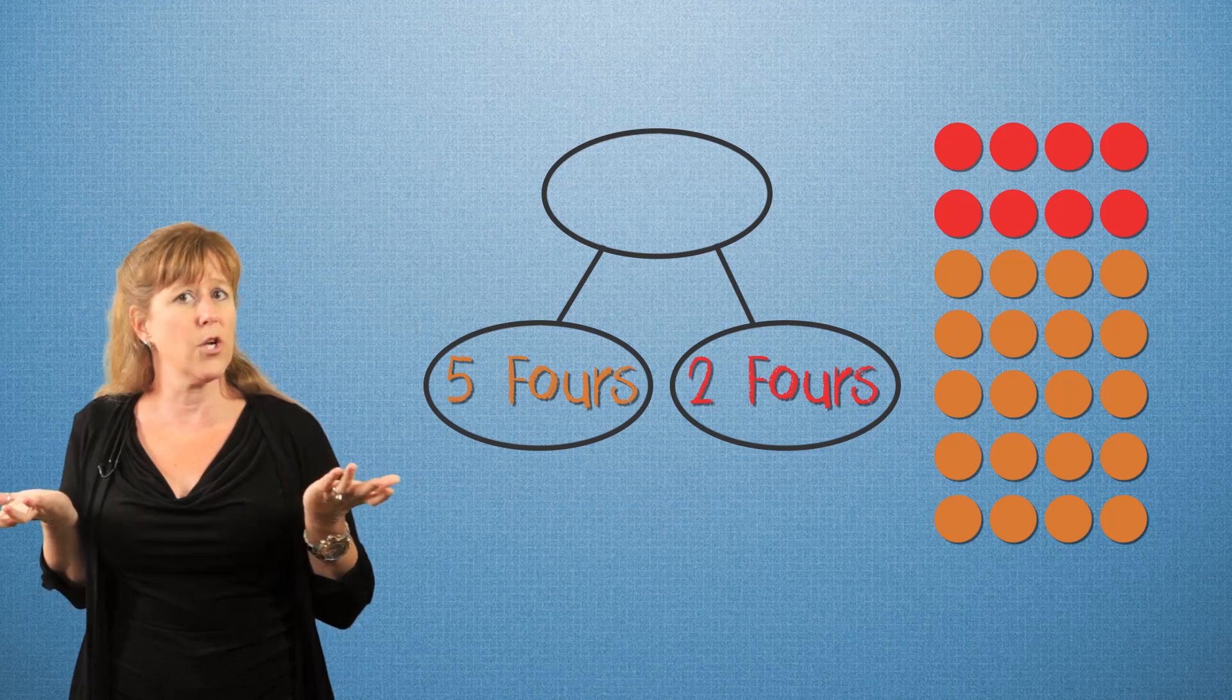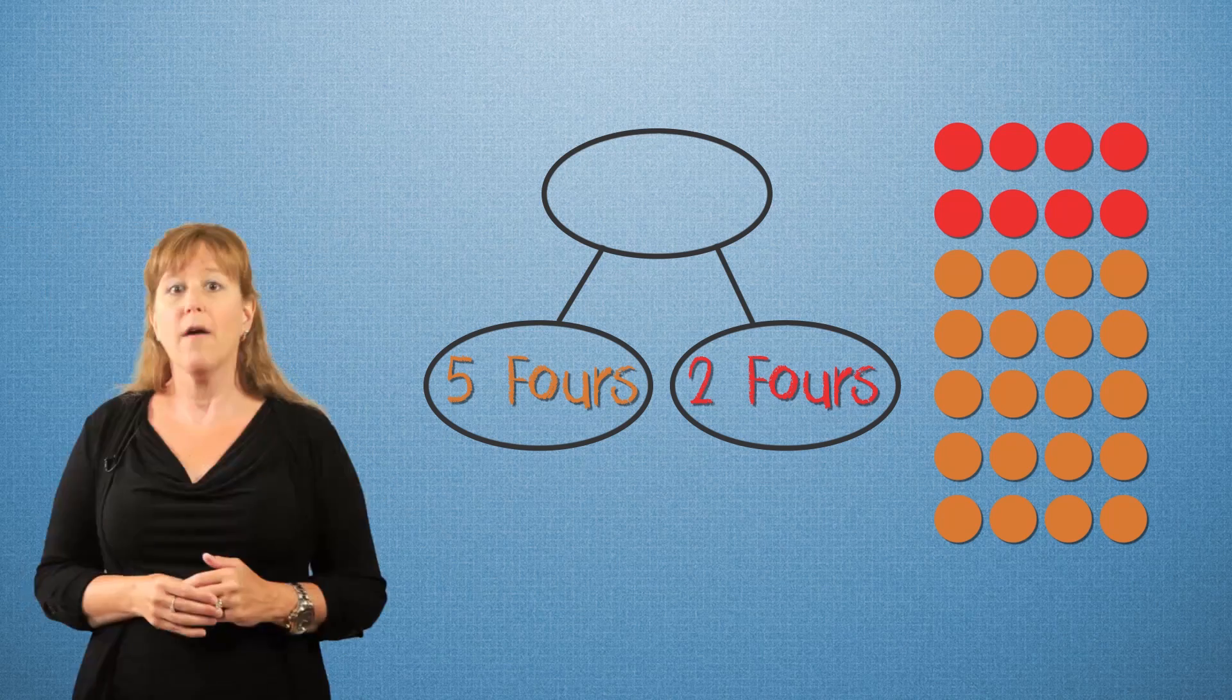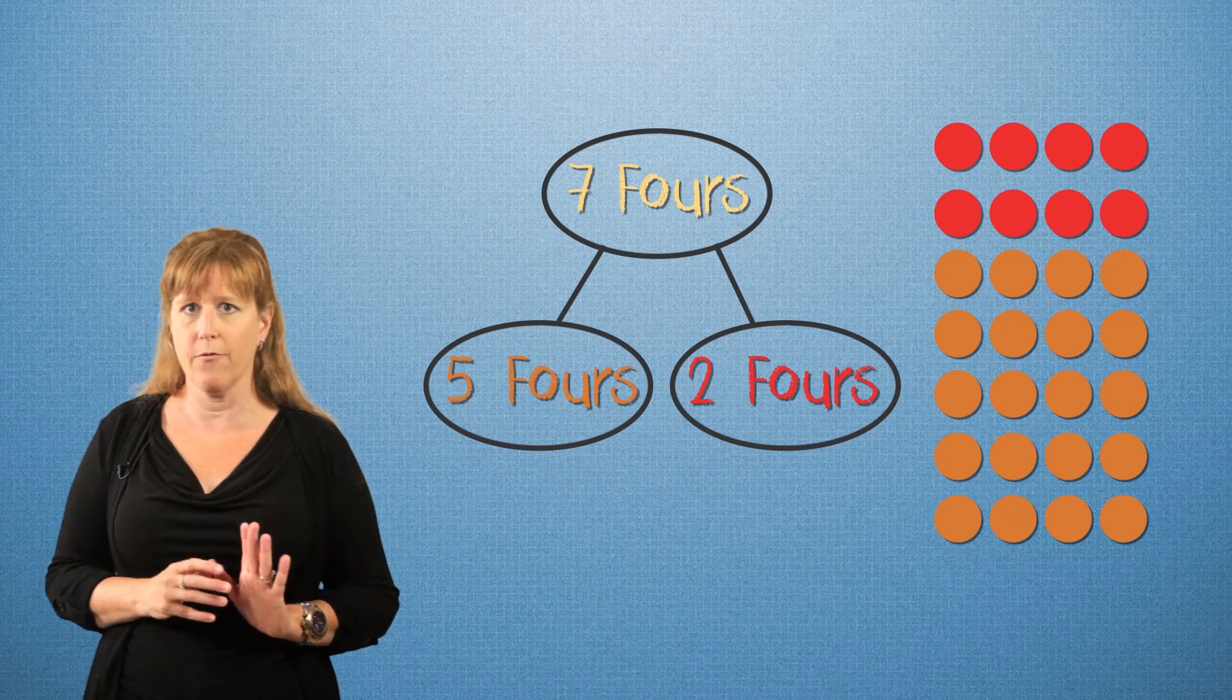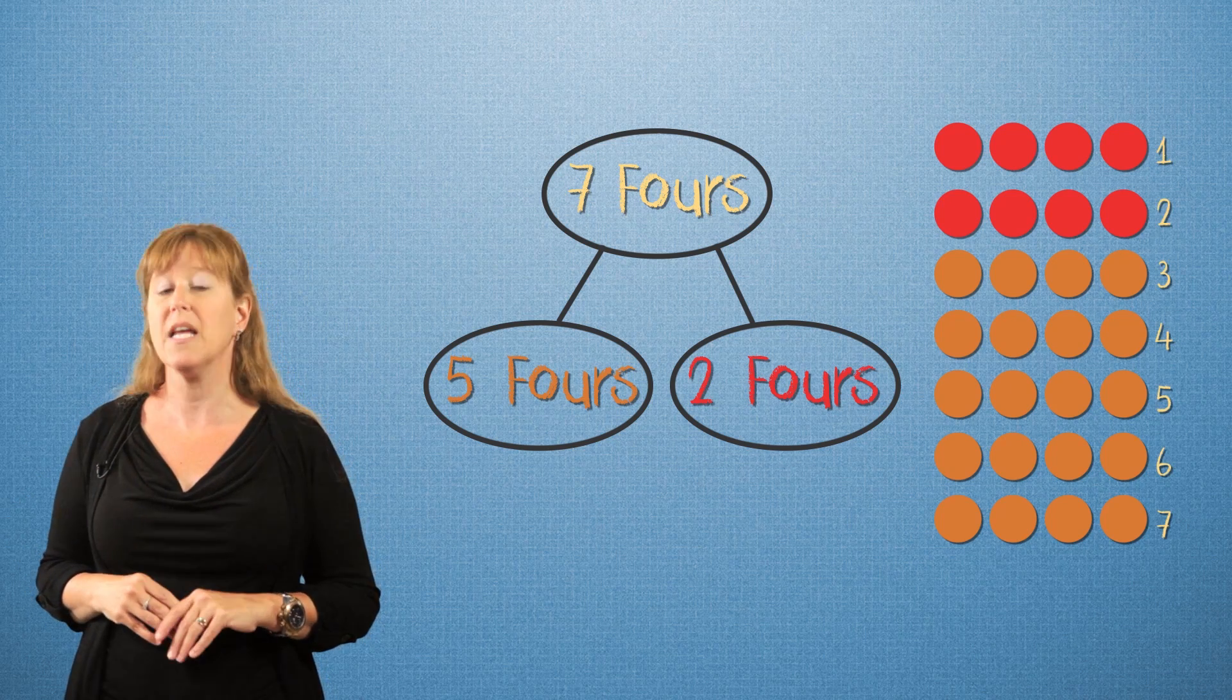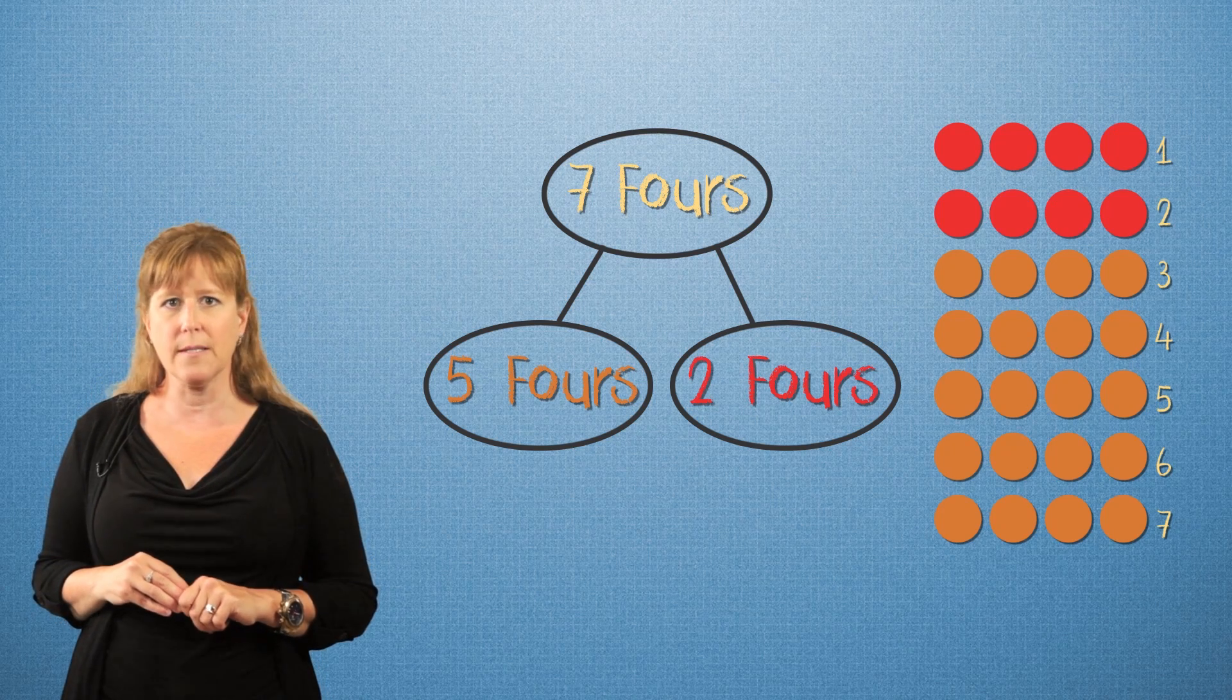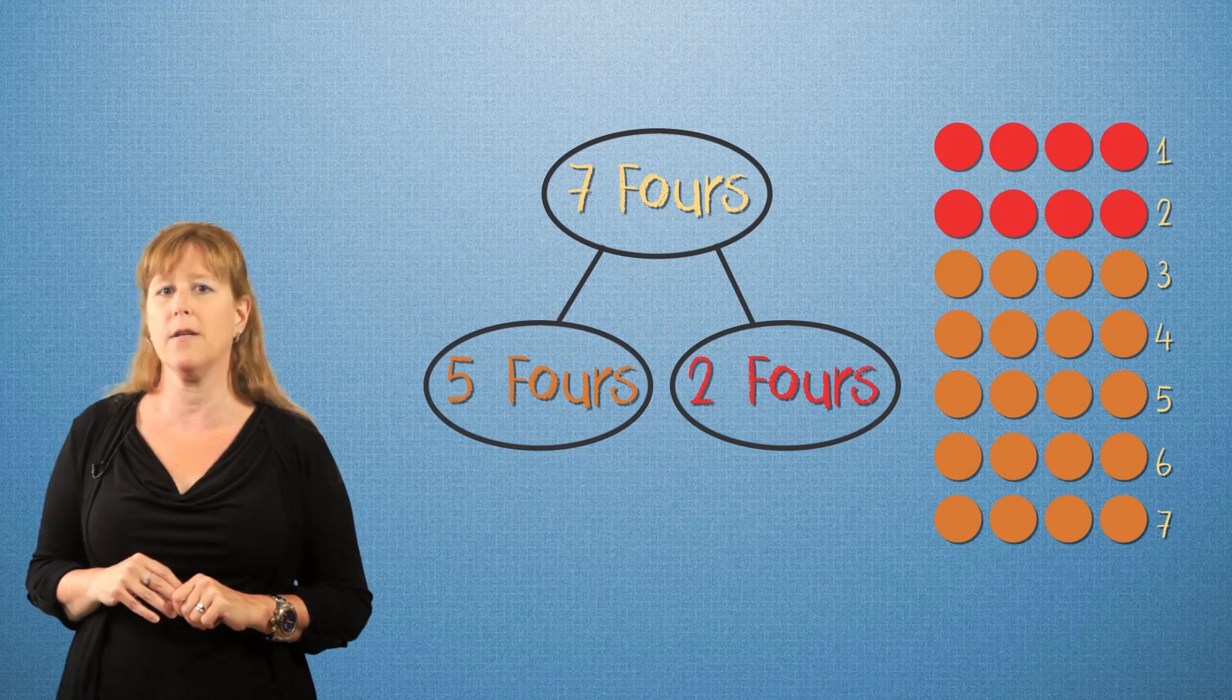What is that in total? How many fours? Five fours and two fours would make up seven fours. That shows us the total number of rows in the theater. This number bond shows us how the seven fours were broken down into five fours and two fours.